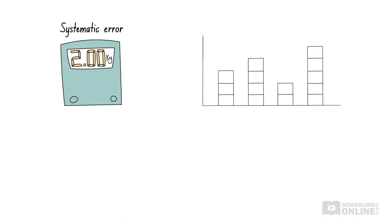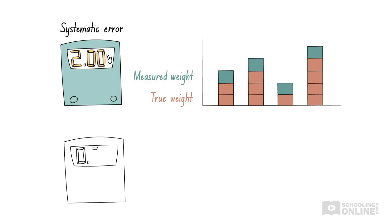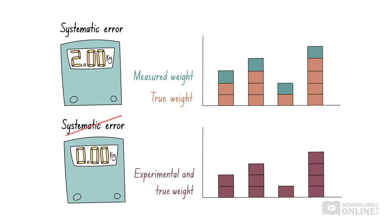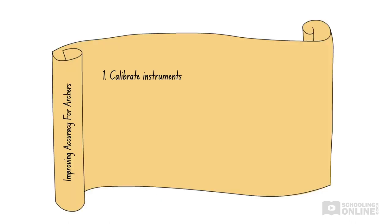Remember our first example, where the weight of everyone in the class was too high because the scales started at 2kg? When we readjusted the scales to start at 0, we removed our systematic error. This is known as calibration, which is a process where we readjust our measuring instruments against standards, or accurate known values, to ensure that they are measuring results accurately.